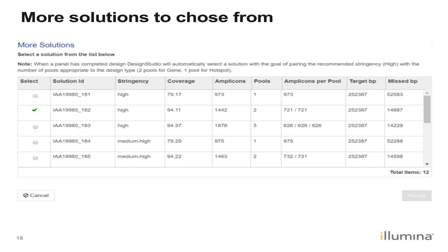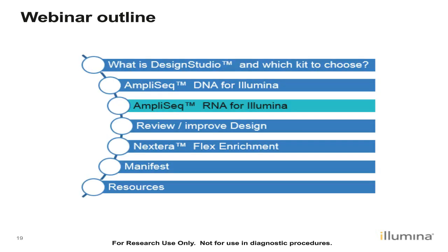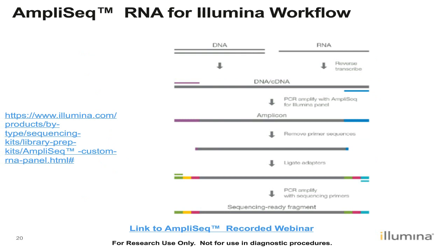Now let's look at AmpliSeq RNA for Illumina. The AmpliSeq RNA for Illumina workflow is very similar to what we already discussed for DNA, except that you start with RNA, which means we need to do a reverse transcription. But once we obtain cDNA, the steps are exactly the same: PCR with our AmpliSeq custom RNA panel, generating amplicons with purple and blue primers, removing the primer sequence, ligating the Illumina adapter, and after a PCR step, generating a sequencing-ready fragment.